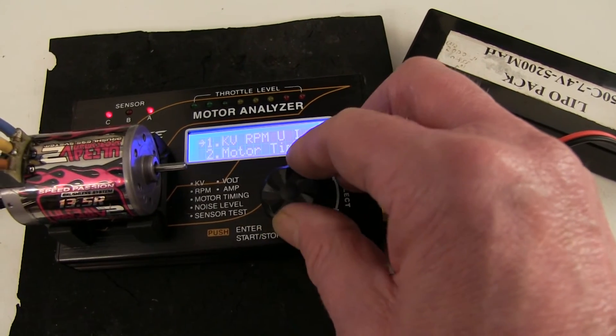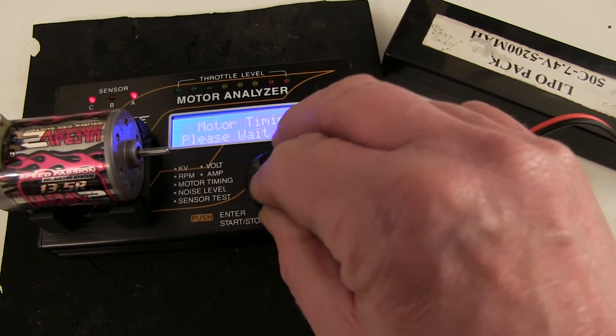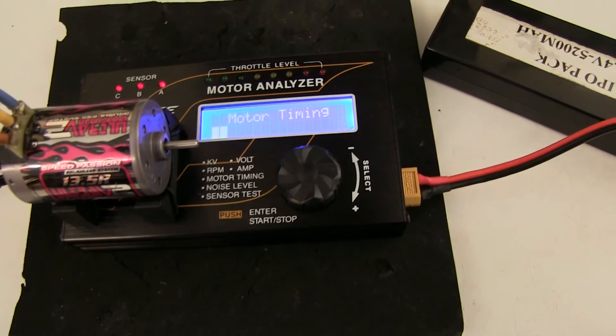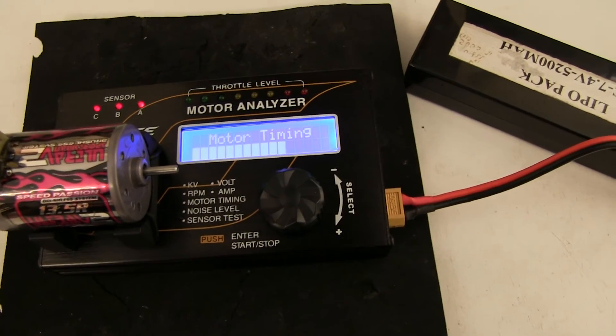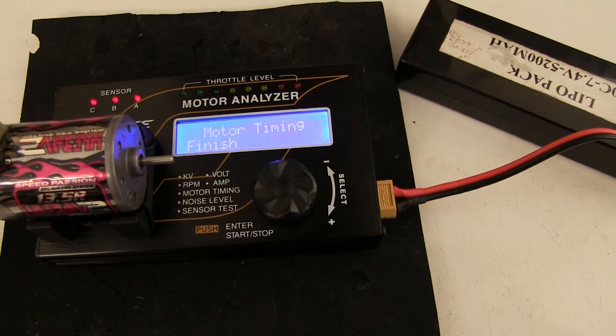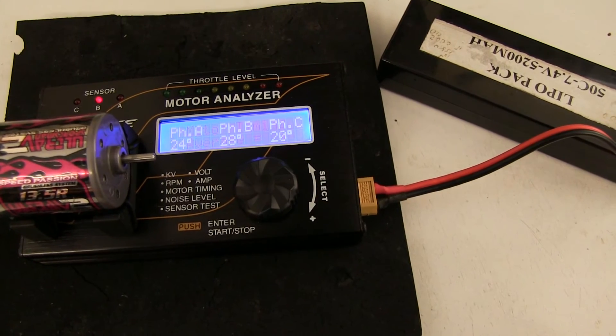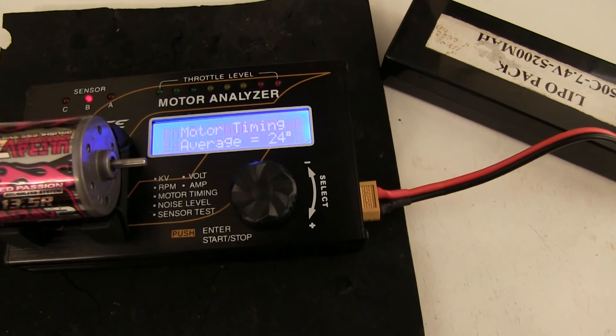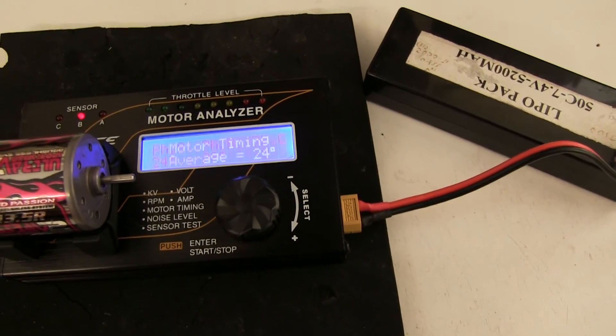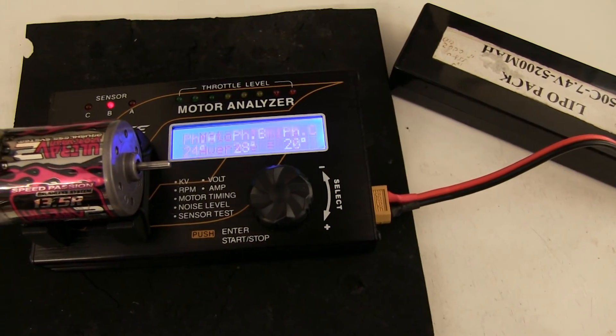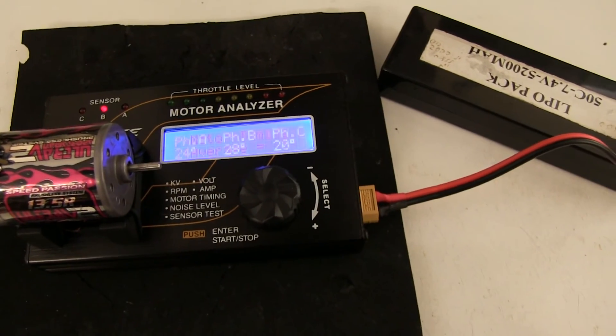So, let's check the motor timing. Press and then press and turn. Now, this is a fixed endbell with no adjustable timing, so let's see what it actually is set at. Well, it says 24 degree average. We've got a 24, a 28 and a 20. Well, this is a cheap motor, and I think that pretty much shows that you're not going to get great performance out of this. Especially if it was a hand out motor or a control motor. It looks like they're going to vary quite a lot.